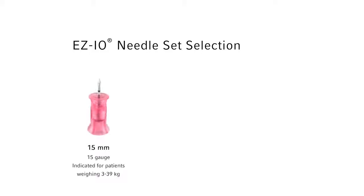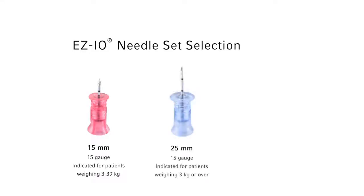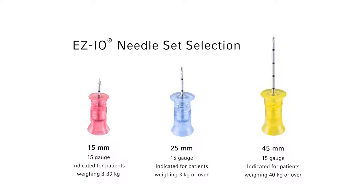Critical judgment should be used to determine appropriate needle set selection based on patient weight, anatomy, and tissue depth overlying the insertion site. To facilitate selection of the correct length needle set, tissue depth over the insertion site should be assessed prior to selection of the needle set.